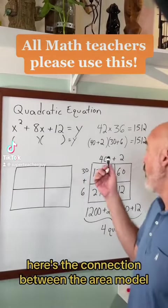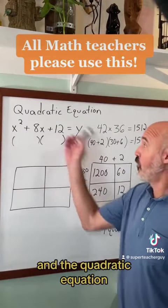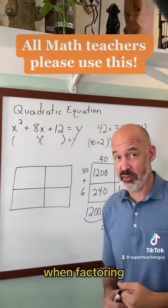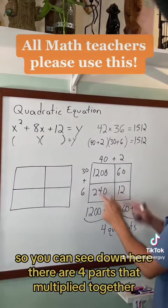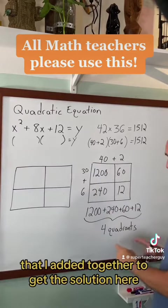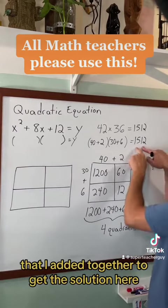Here's the connection between the area model and a quadratic equation when factoring. So you can see down here there are four parts that multiplied together that I added together to get the solution here.